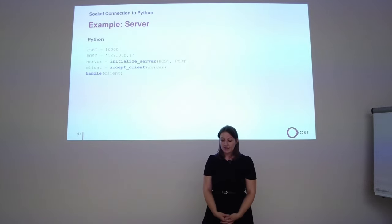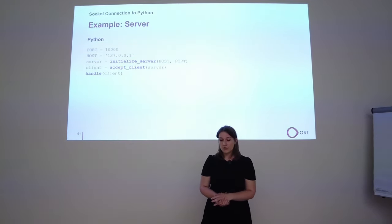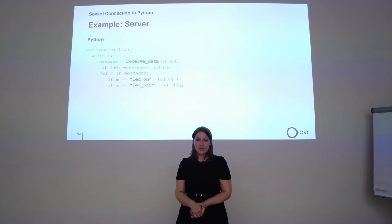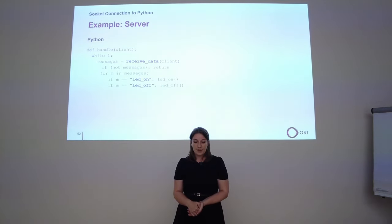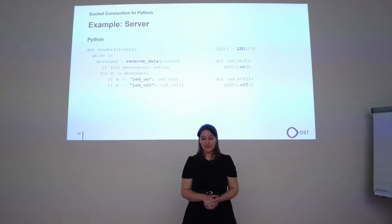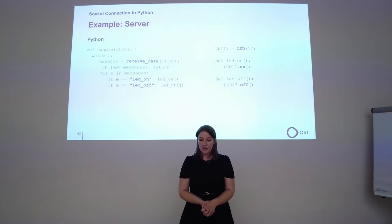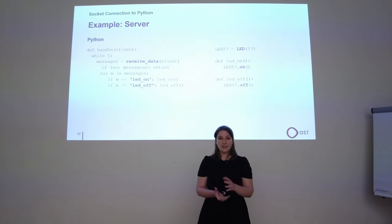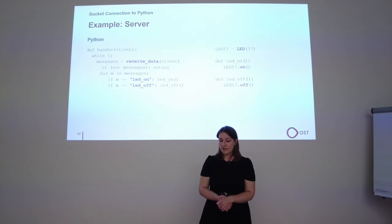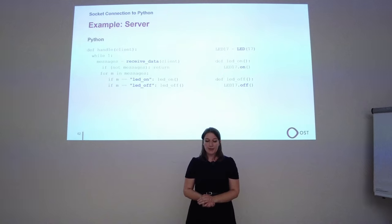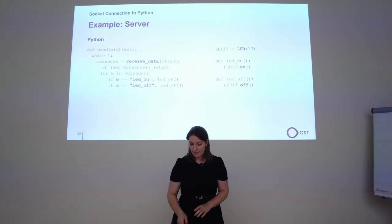On the Python server side I initialize a socket connection, wait for Haskell to connect, and handle requests in an infinite loop, receiving data from the socket and executing the corresponding commands. You can see the simple interface of GPIO Zero: it uses a pre-built LED object. You initialize it with a pin and it is automatically set as output. Then you can simply call LED.on() or LED.off() — much simpler than writing to files and handling everything manually.